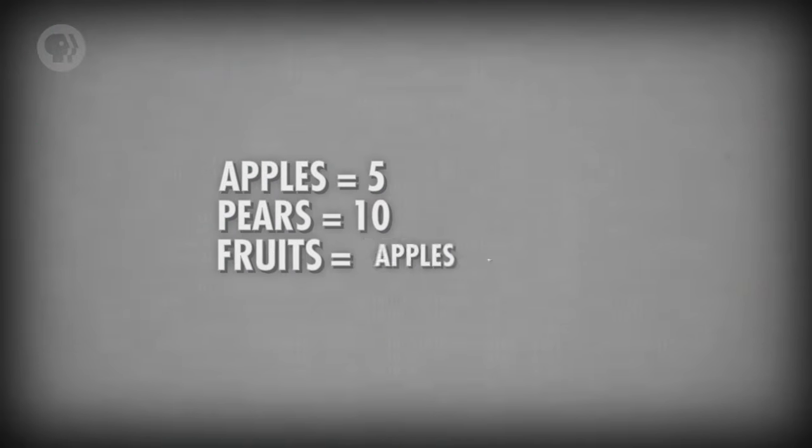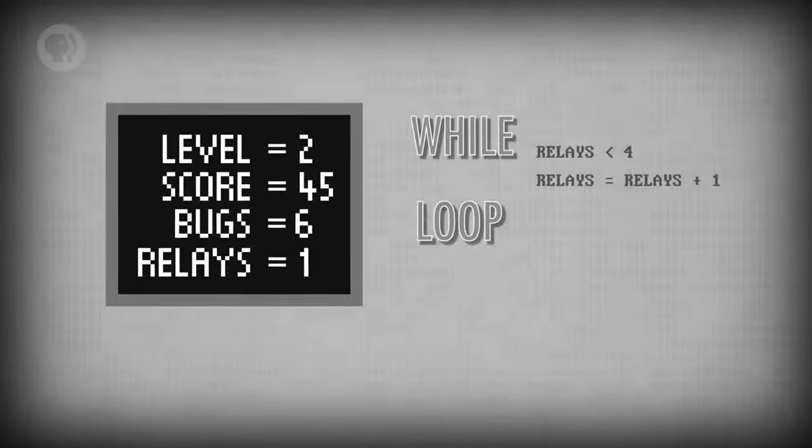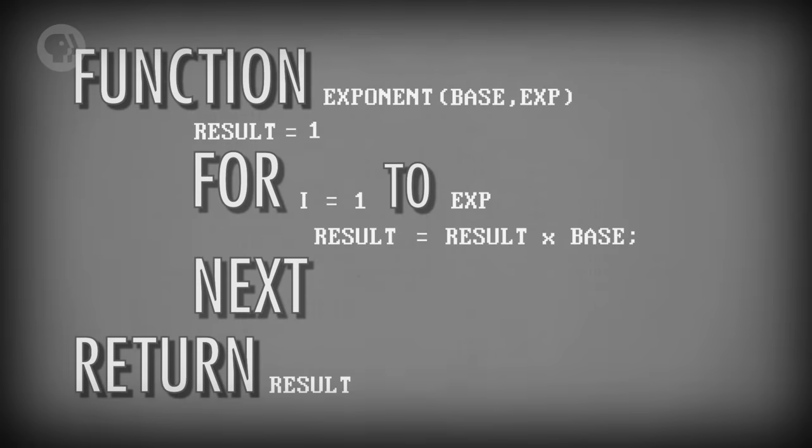Hi, I'm Carrie-Anne and welcome to Crash Course Computer Science. Over the past two episodes, we got our first taste of programming in a high-level language like Python or Java. We talked about different types of programming language statements, like assignments, ifs and loops, as well as putting statements into functions that perform a computation, like calculating an exponent.